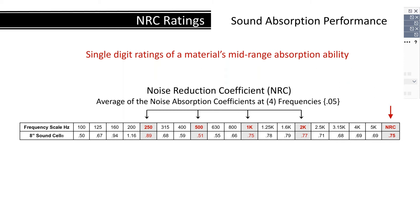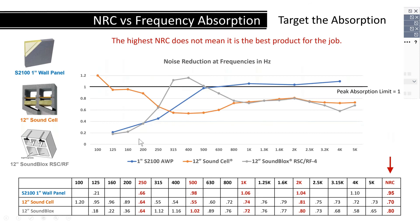Human speech is mostly heard between 250 and 1000 hertz, so the NRC was initially developed to provide a simple number for how well a material absorbs human voice. However, merely relying on the NRC to determine the effectiveness of an absorber is a mistake. For example, a one-inch fabric panel has an NRC of .95, the 12-inch sound cell units have an NRC of .70, and the 12-inch sound block units have an NRC of .80.